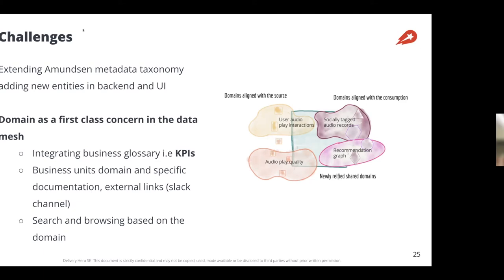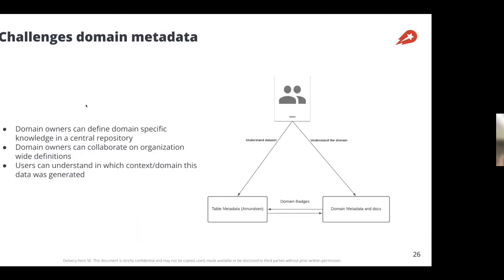There are also organization-wide domains where KPIs, glossary terms, or definitions are used across all business units and teams. That's one of the main challenges when spinning up a centralized catalog for a data mesh: integrating business unit and domain-specific documentation — external links for business units, the owner of the domain, Slack channels for questions, and search and browsing based on domain.